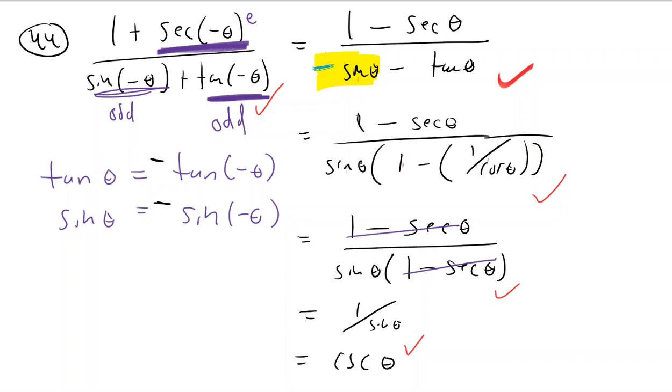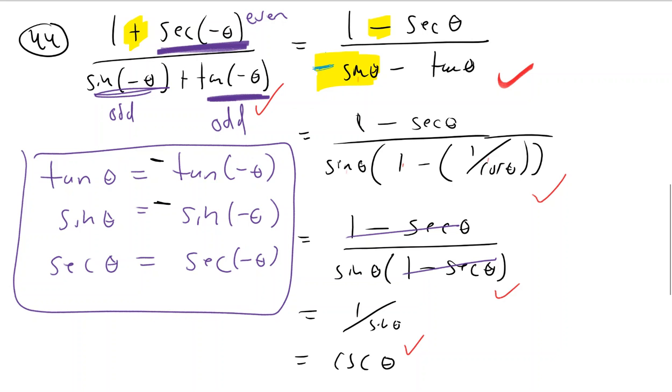Secant is an even function. Only cosine and its reciprocal are even. And what it means to be even is that the secant of theta is the same thing as the secant of negative theta. No multiplying by negative one. So these are the identities we're using. So they changed this for some reason from a plus to a minus, which would make sense if it was an odd function, but that's wrong because it's an even function. You should not be multiplying by negative one there. So these two spots that I have highlighted, those are the only two errors. They misused the even odd identities two of the three times.